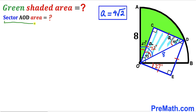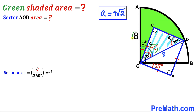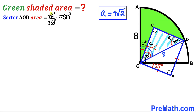Now we calculate the area of sector AOD. Recalling the sector area formula: Area = (θ/360°) × π r². In our case θ = 72° and r = 8 units. So we get (72/360) × π × 8² = (1/5) × π × 64 = 64π/5. Therefore the area of sector AOD is 64π/5.